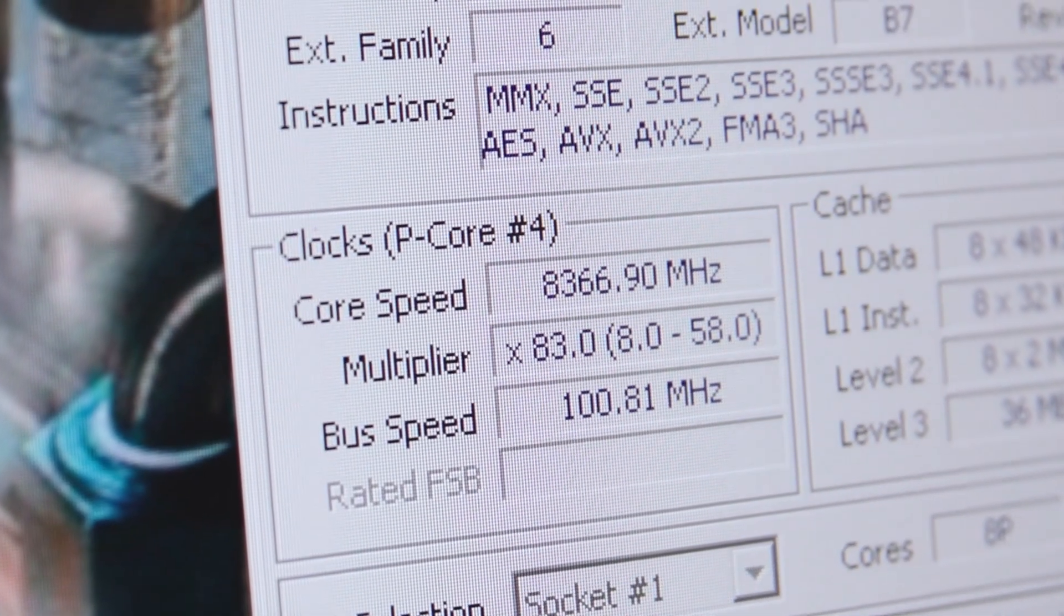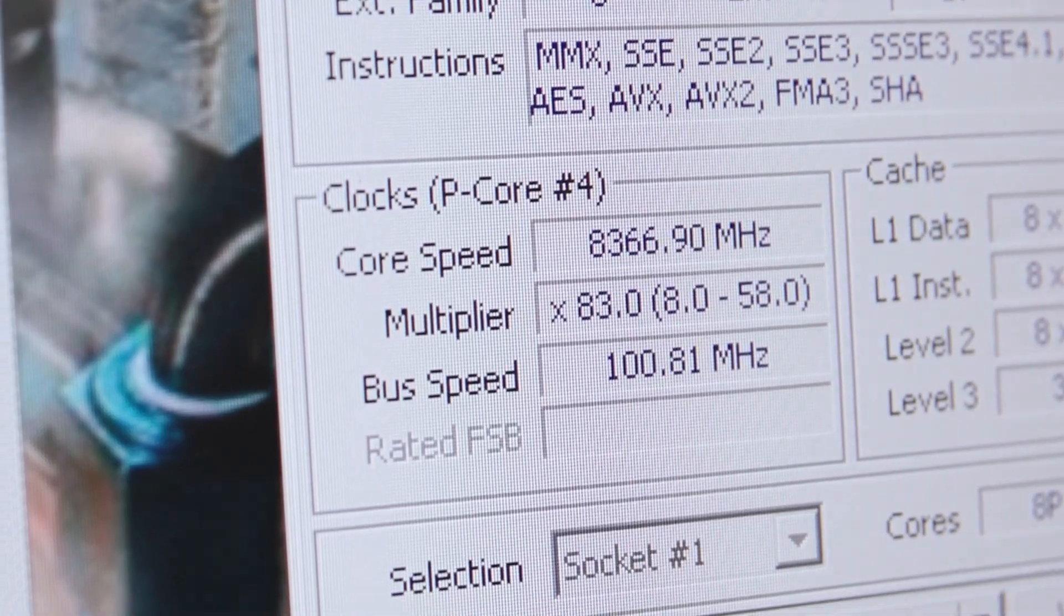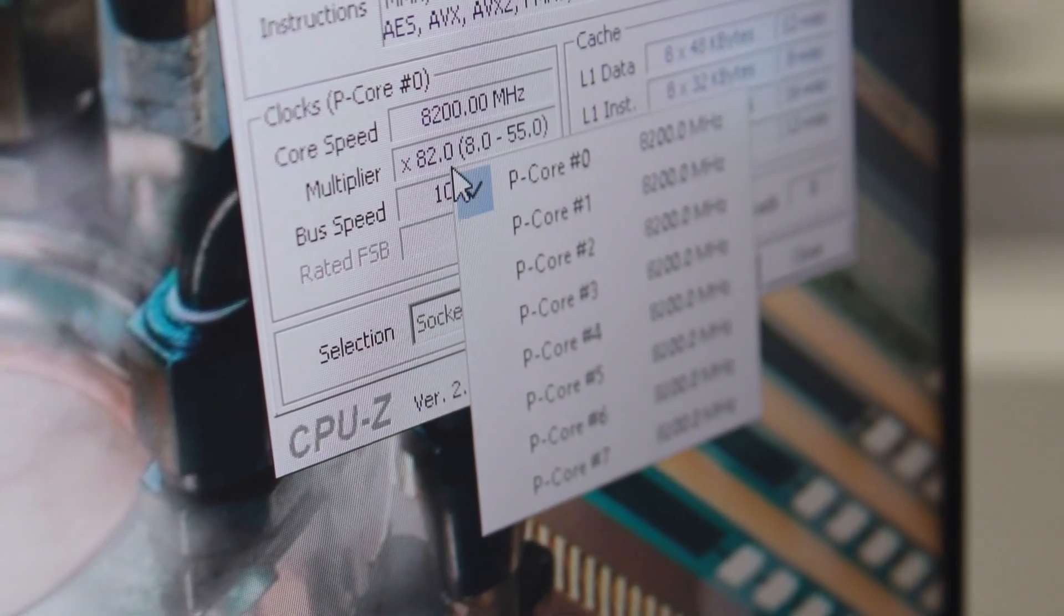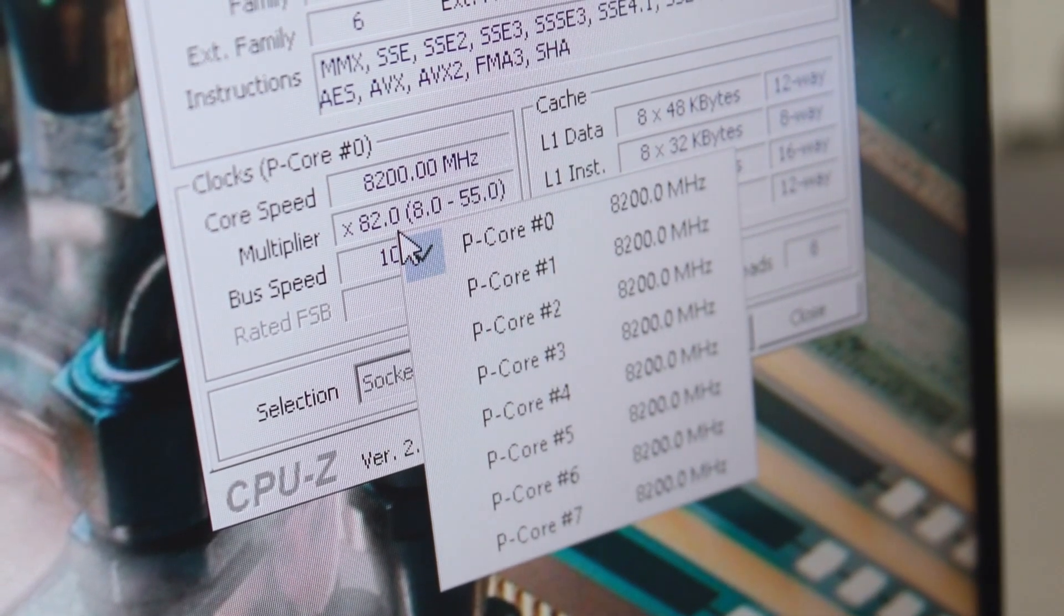We saw these guys hit 8.366 GHz on single core, which is amazing, and we also did a multi-core of 8.2 GHz, all of them on the p-cores.